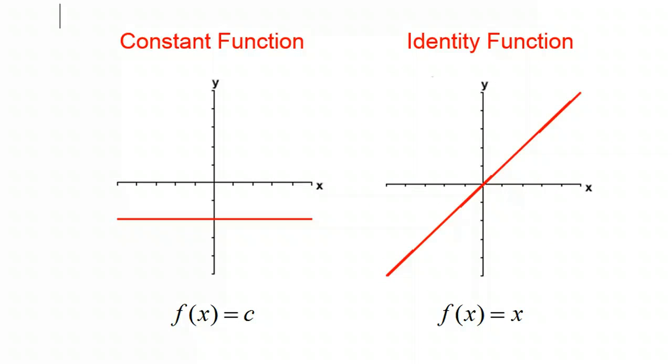We've already talked about the constant function and the identity function, but again, here are the graphs of those. The constant function is a horizontal line. The identity function is the line y equals x.